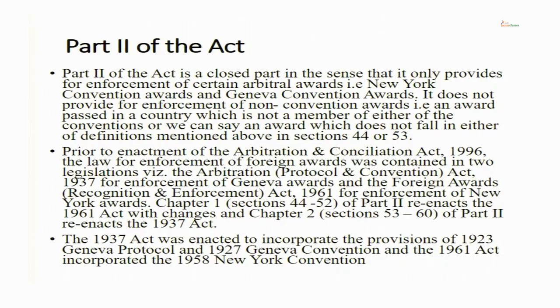Part 2 has two chapters. Chapter 1, from Section 44 to Section 52, re-enacts the 1961 Act and relates to enforcement of New York Convention Awards. Chapter 2, from Section 53 to Section 60, relates to enforcement of Geneva Convention Awards. Part 2 is a closed part because it relates only to these two types of foreign awards and has nothing to do with non-convention awards.